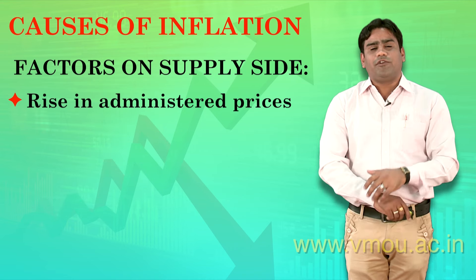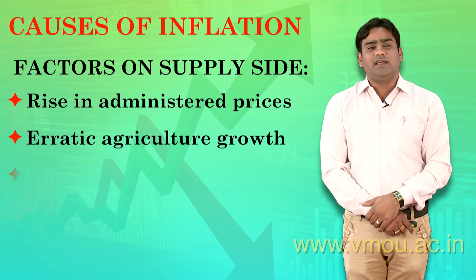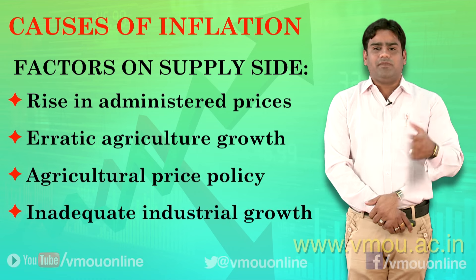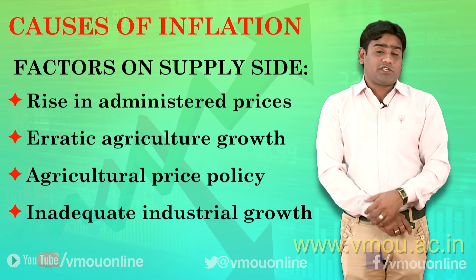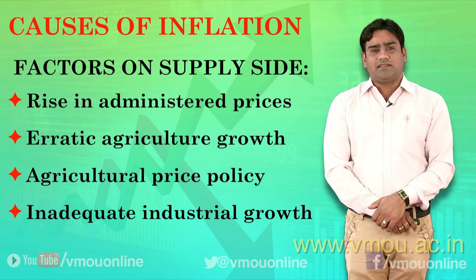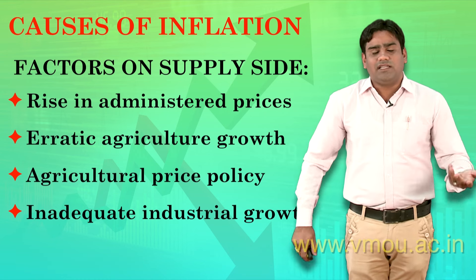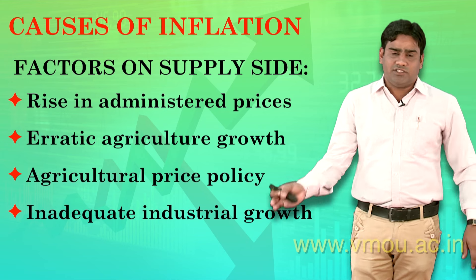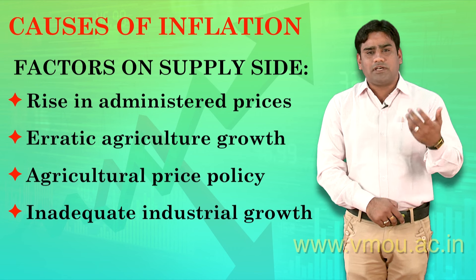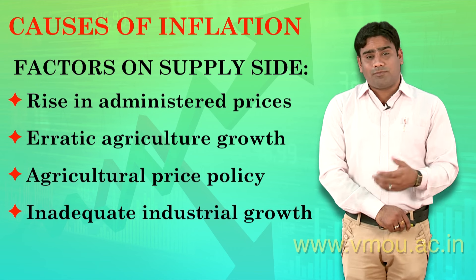The second part is the supply side, which is called rising administrative prices. The price level of commodities can be increased from the supply side. Agriculture growth — if there is less agricultural output, the price level of commodities will also increase.